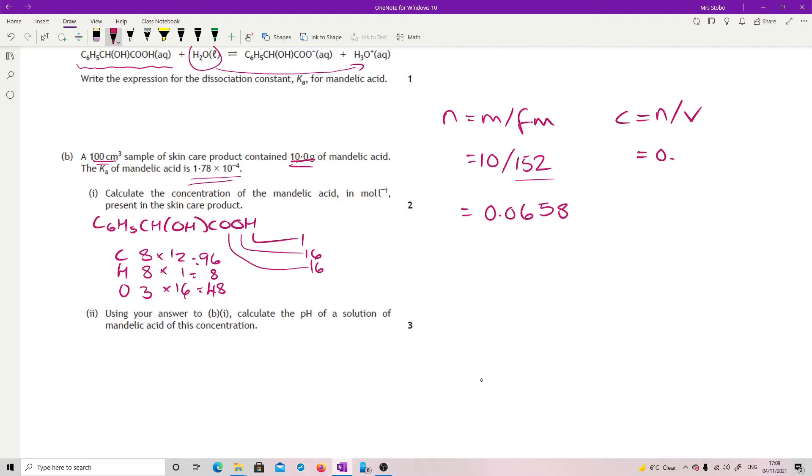I'm then going to take this over. You can keep all this in your calculator, maybe better. Divide it by your volume. Volume is 100 centimeters cubed, which is 0.1 liters. So that is 0.658 moles per liter.